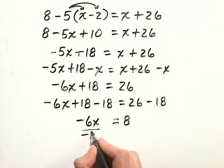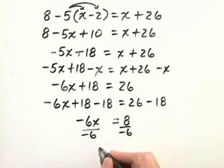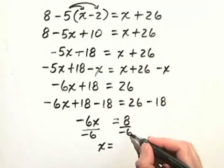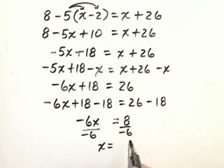Finally, we divide both sides by negative 6, and we get x equals 8 divided by negative 6. Let's simplify that. At the same time I simplify it, I'm simply going to move the negative sign up to the numerator, because that's standard. We'll divide both the numerator and denominator by 2, and our solution is that x is equal to negative 4 thirds.